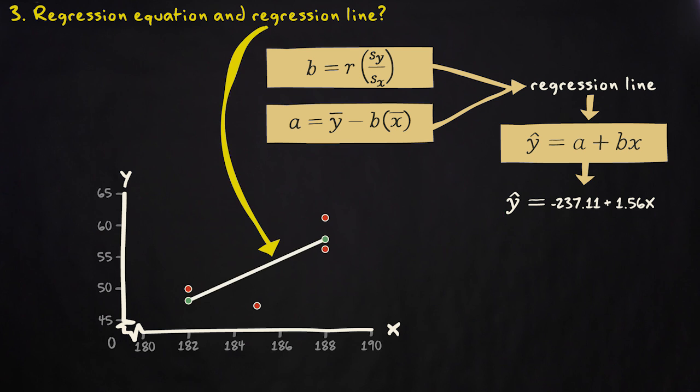We can now draw the regression line. This line is the straight line that best represents the linear relationship between x and y. It is the line for which the sum of the squared residuals is the smallest. We can, of course, predict y values for every possible x value. All these predicted y values, or y-hats, are located on the regression line.